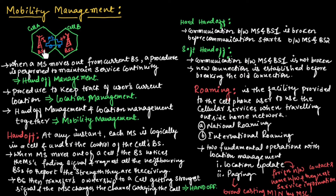When a mobile station moves from the current base station to another base station, a procedure is performed to maintain the service continuously — this is known as handoff management. The procedure used to keep track of the user's current location is known as location management.